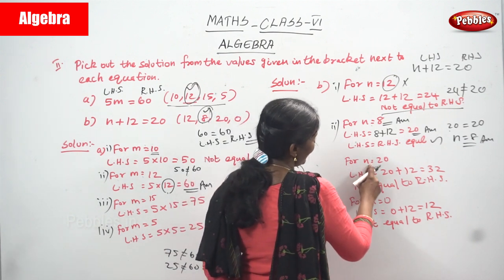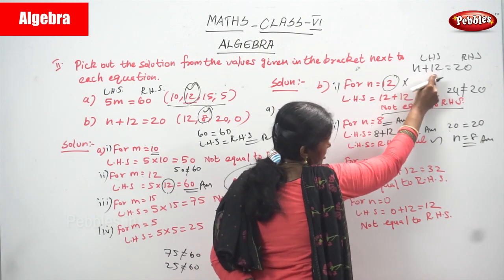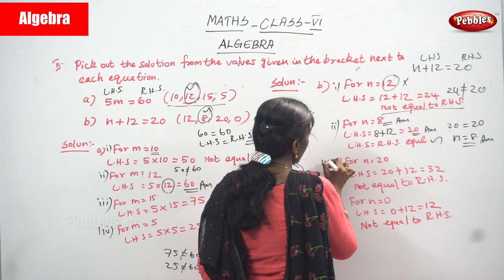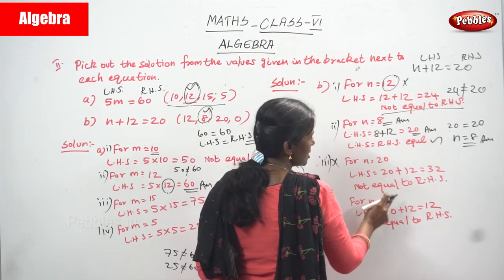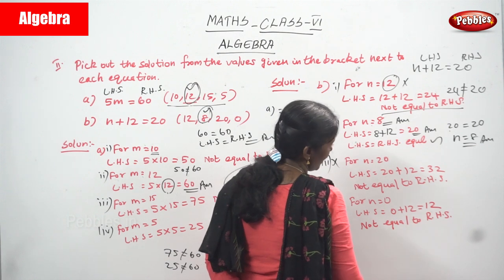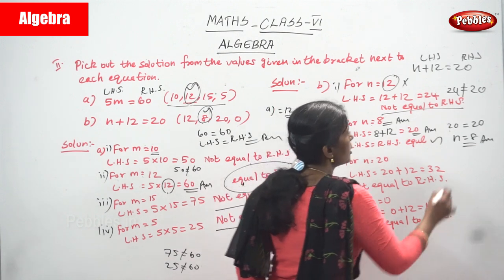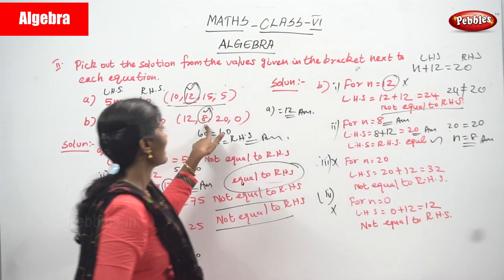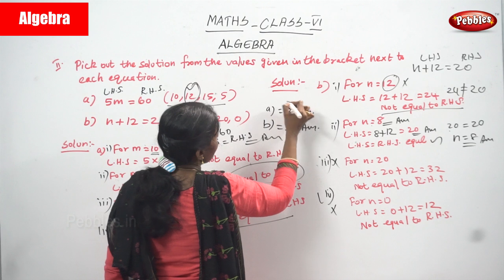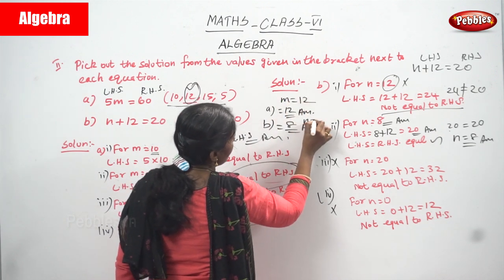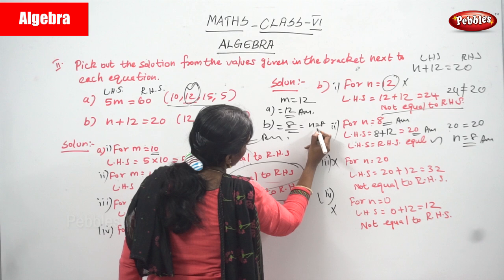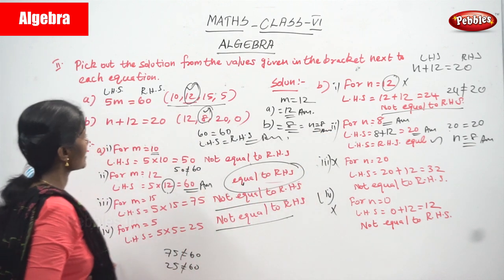We also need to check the remaining options. For n equal to 20: LHS is n plus 12, substituting gives 20 plus 12 equals 32, which is not equal to RHS — not a solution. For n equal to 0: LHS gives 0 plus 12 equals 12, not equal to RHS — also not a solution. So the solution is n equal to 8. The B answer is 8, and the A answer was m equal to 12.